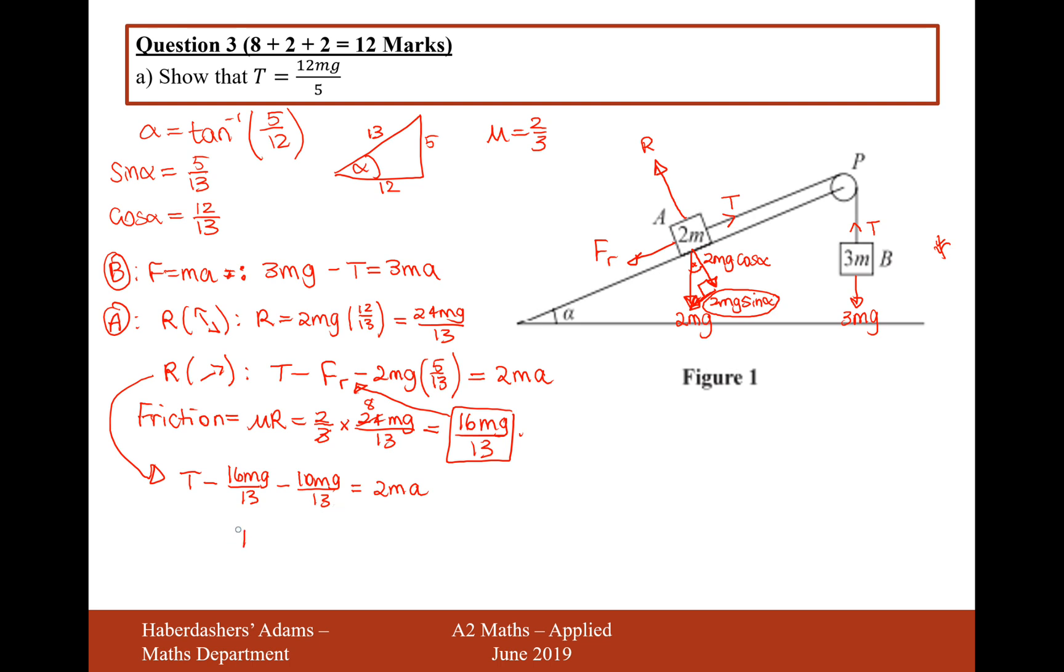Right, we've nearly got it here. We've got T equals... let's move all of this stuff onto the other side. So we've got 2MA plus 26MG over 13. That's 2MG. The 26 and 13 will cancel out. So T equals 2MA plus 2MG.